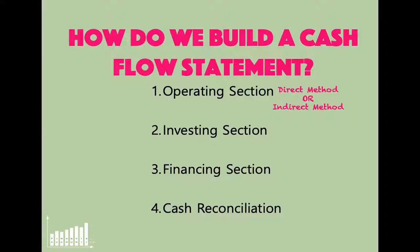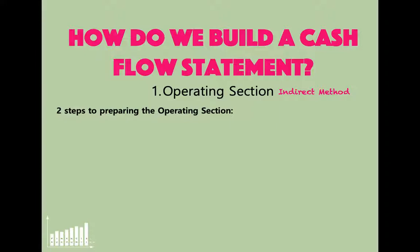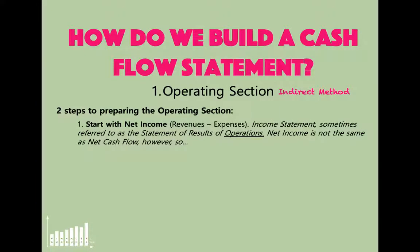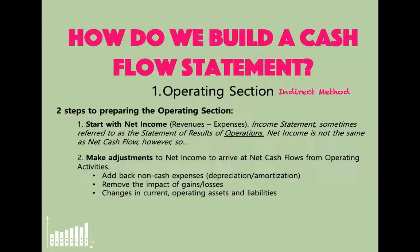There are two steps to preparing the operating section. Step one: we start with net income, which is revenues minus expenses. The income statement is sometimes referred to as the statement of results of operations. However, net income is not the same as net cash flow. Step two: we make adjustments to net income to arrive at net cash flows from operating activities. We add back non-cash expenses like depreciation and amortization, remove the impact of gains and losses, and look at changes in current operating assets and liabilities.